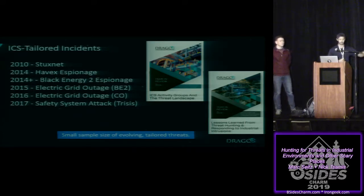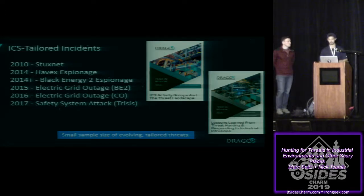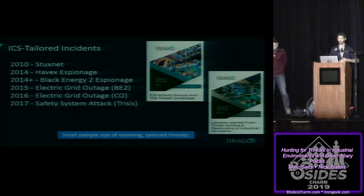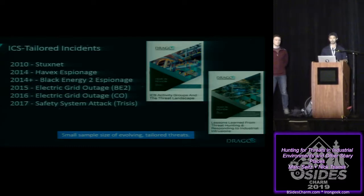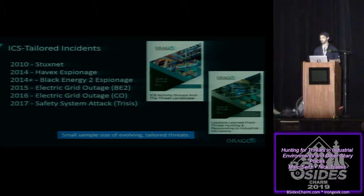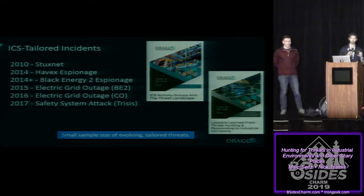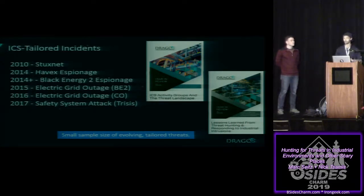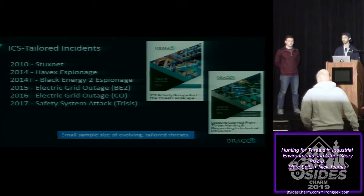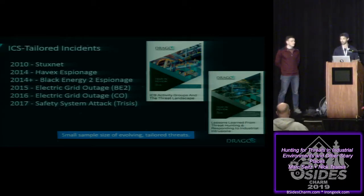A brief background: we're not going to get into specifics of threat hunting, but just a brief background on ICS-tailored incidents from the past couple of years. The main takeaway — and we direct you to the research we have publicly on our website — is that in the public domain there's a small sample of evolving threats. These threats are tailored because everyone is unique in some capacity. The landscape is very specific to the kinds of domains we're protecting.